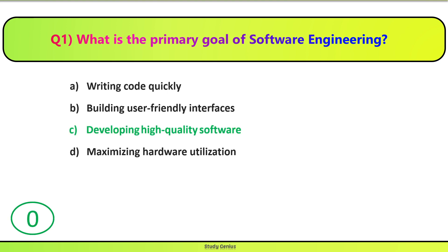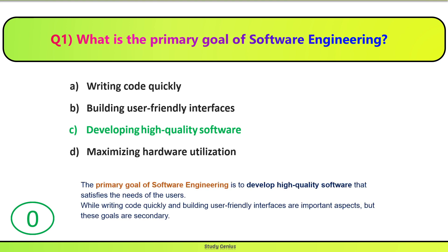Correct answer is C. Software engineering ka primary goal high quality software ko develop karna hai, jo users ki needs ko satisfy kar sakay. Jaldi code likhna aur user friendly interfaces build karna are also important aspects in software engineering, but these goals are secondary.